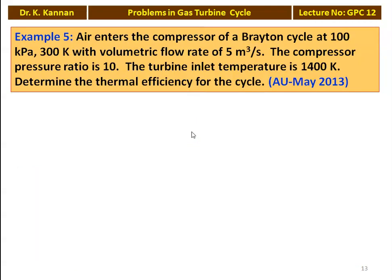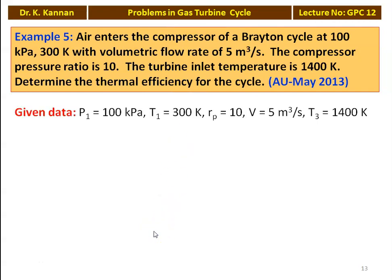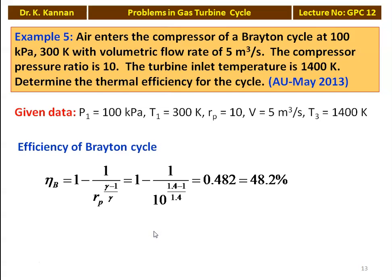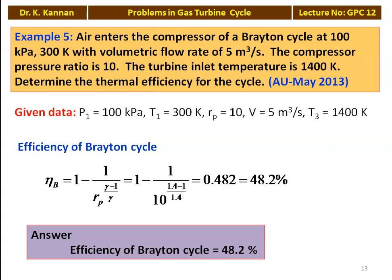Example 5: Air enters the compressor of a Brayton cycle at 100 kPa and 300 K with a volumetric flow rate of 5 m³/s. The compressor pressure ratio is 10 and turbine inlet temperature is 1400 K. Determine the thermal efficiency. Given: P1 = 100 kPa, T1 = 300 K, Rp = 10, T3 = 1400 K. Brayton cycle efficiency: η_B = 1 - 1/Rp^((γ-1)/γ) = 1 - 1/10^(0.4/1.4) = 0.482, i.e., 48.2%.